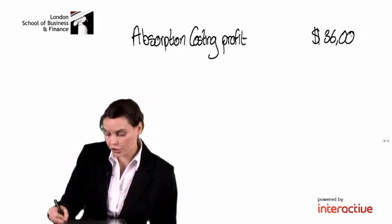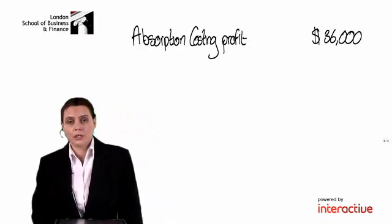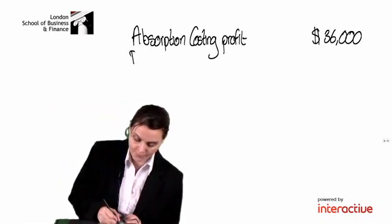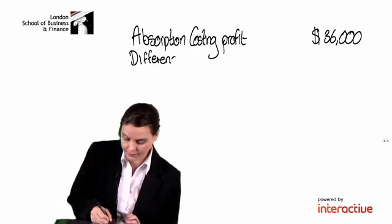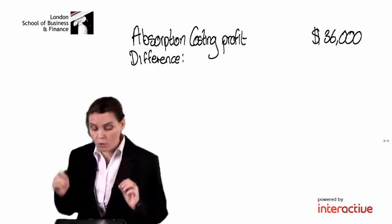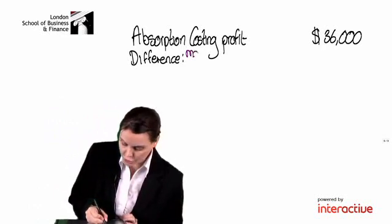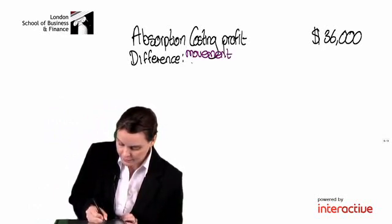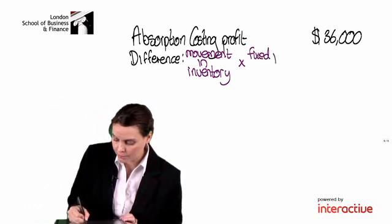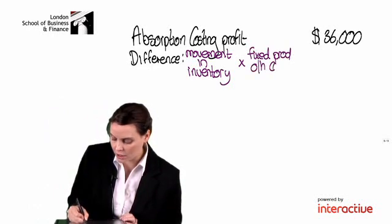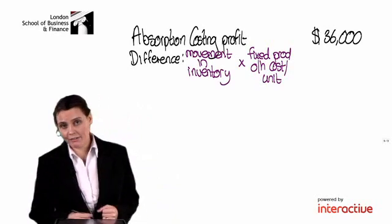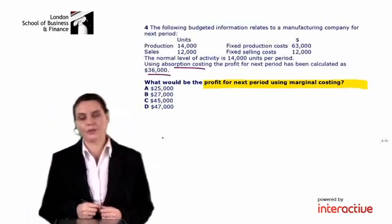To do this, there are two things we need to understand. First of all, we have to be able to calculate the difference in profits. The difference between marginal and absorption costing profits will always be the movement in inventory multiplied by the fixed production overhead cost per unit.